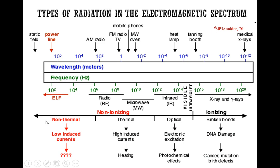On the far left of the non-ionizing side, we have radiation that is non-thermal or produces low induced currents. These are known as ELF, or extremely low frequency radiation. This is what we see in power lines and static fields — very small frequency and very large wavelength.